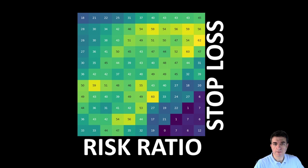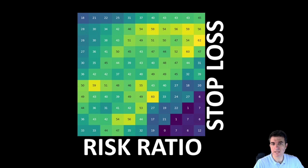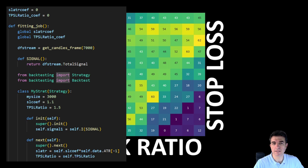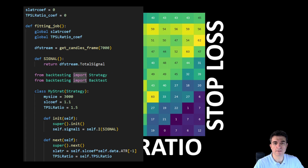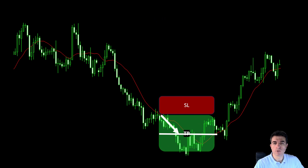Usually the backtest results are displayed on a heat map and we pick the parameters yielding the maximum return values. In this example we pick the parameters yielding around 60% in returns — this is the maximum return value on the heat map. We're not saying this is the best method to pick the stop loss and take profit values, but at the moment it's enough to allow us to run our example.